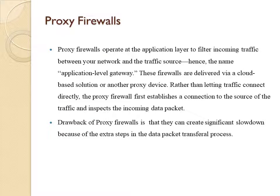The next type is a proxy firewall, also called an application level gateway or cloud firewall. A proxy firewall operates at the application layer to filter incoming traffic between your network and the traffic source. These firewalls are delivered via a cloud-based solution or another proxy device. Rather than letting traffic connect directly, the proxy firewall first establishes a connection to the source of the traffic and inspects the incoming data packet. This check is similar to stateful inspection in that it looks at both the packet and the TCP handshake protocol. However, proxy firewalls may also perform deep-layer packet inspection, checking the actual content of the information packet to verify it contains no malware.